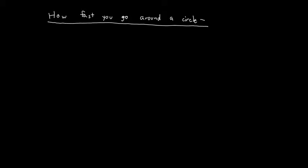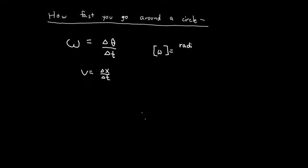Now we know how far we go around a circle; we need to know how fast. We quantify this with angular velocity, using the Greek letter omega, which looks like a curly w. Omega equals change in theta divided by change in time — analogous to velocity in linear motion, which is change in position divided by change in time. The units of omega are radians per second.